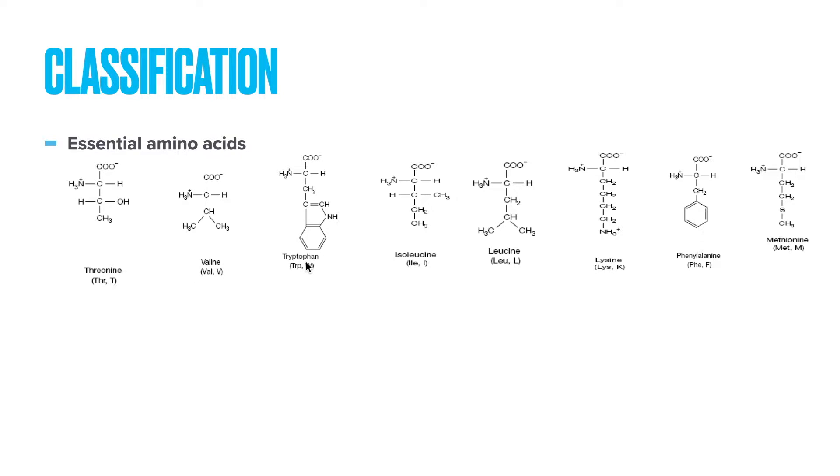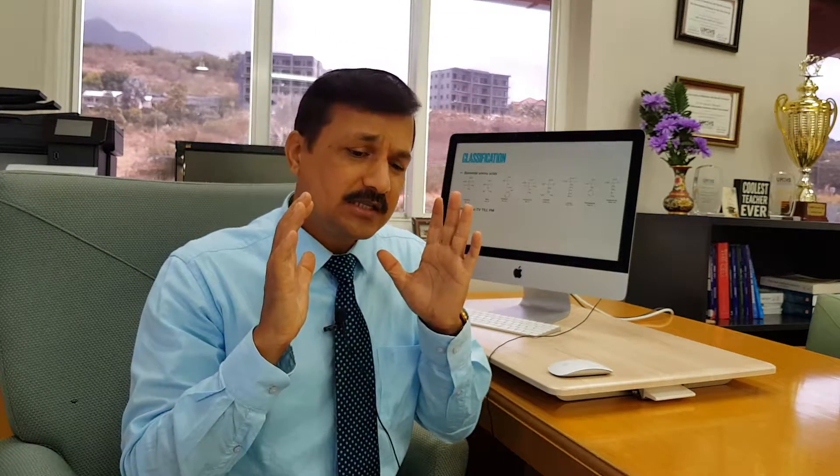You can remember essential amino acids using the mnemonic TV TILPM — T for threonine, V for valine, T for tryptophan, I for isoleucine, L for leucine, L for lysine, P for phenylalanine, and M for methionine. These essential amino acids must always be taken in our diet. If there is a deficiency of even a single essential amino acid, it can put us into negative nitrogen balance because our body proteins will start breaking down to provide those amino acids so that essential protein synthesis can continue.